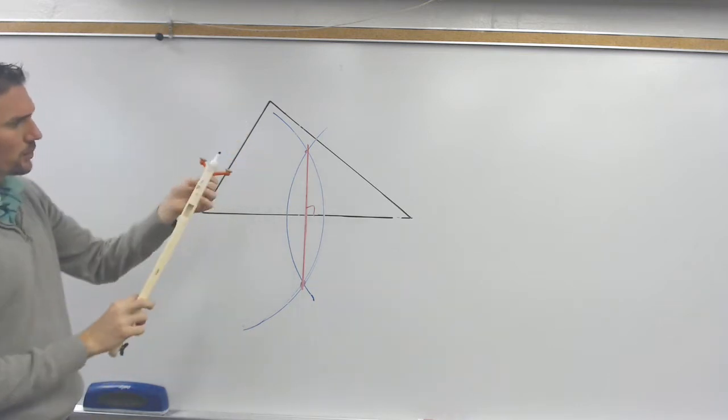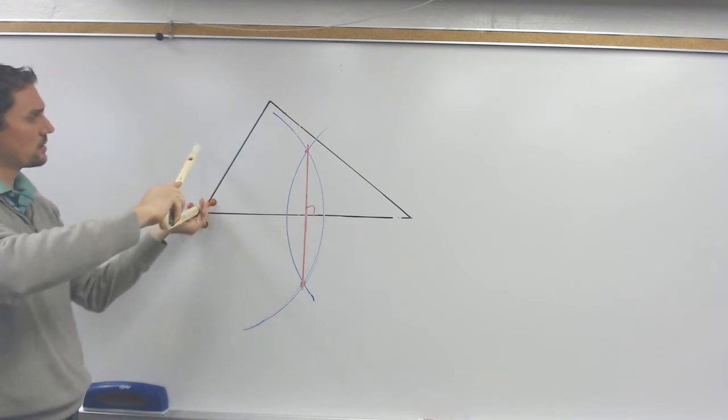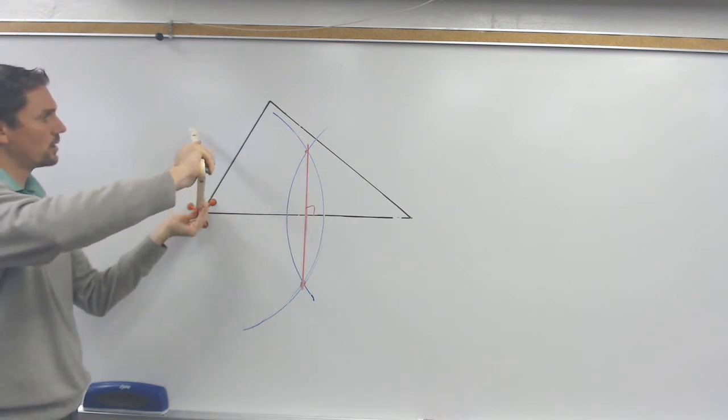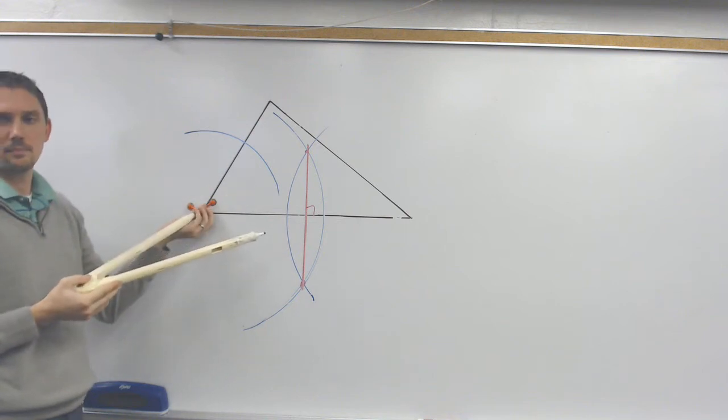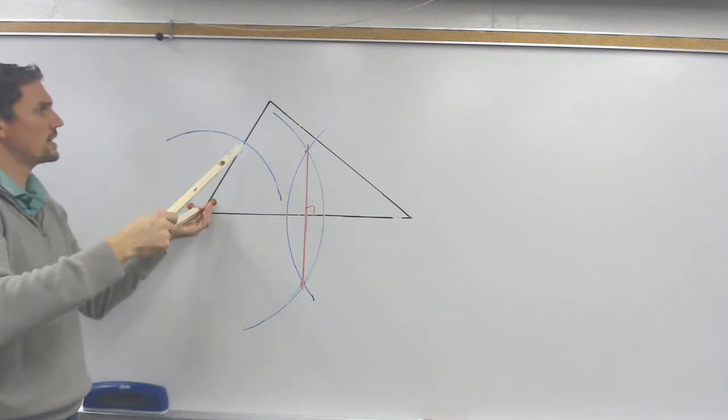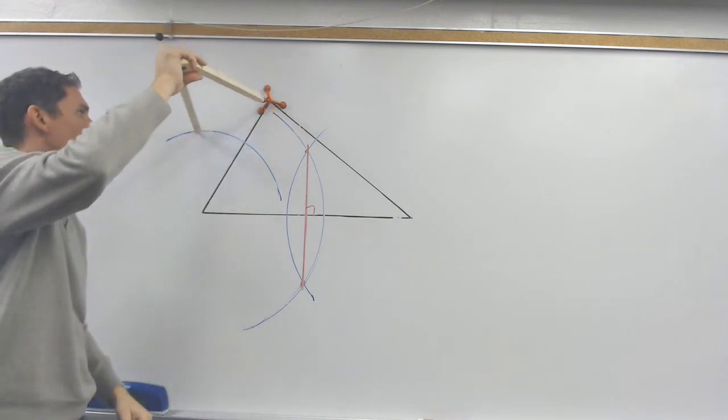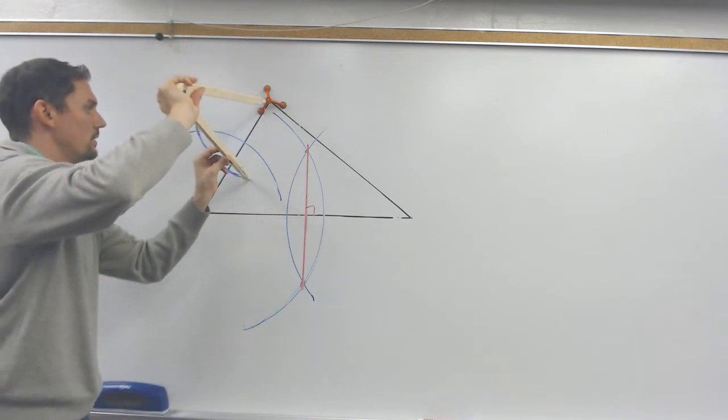Here we go. Put the pointy part here. We've already done this side, so I'm going to do this shorter side here now. So now I'm going to go a little bit more than halfway, make my arc, and then do the same thing on the other corner of that side of the triangle. Make that arc right there.